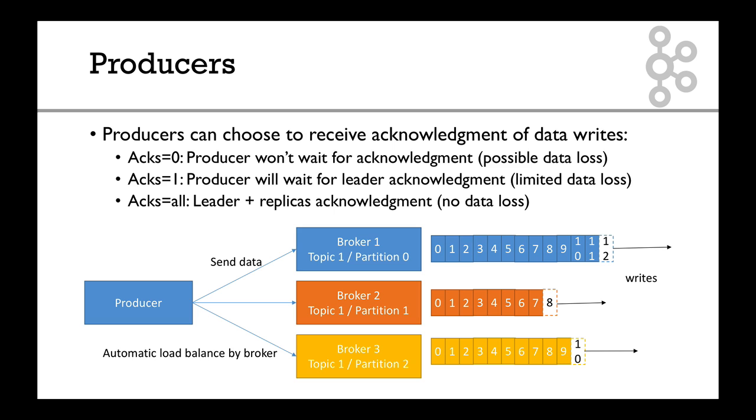So that's a really important concept. The acks=0 is the highest performance. You send data, you don't even wait for acknowledgement. And acks=all is the safest. You wait for all the replicas to acknowledge your writes.